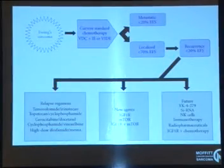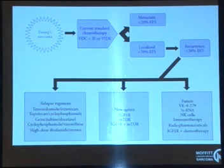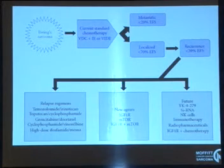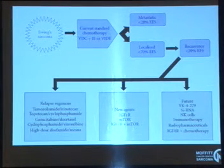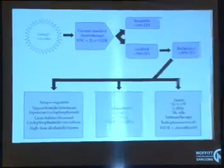New agents being tried for Ewing sarcoma, especially with recurrence, include temozolomide, topotecan, and gemcitabine, which seem fairly effective. Newer targeted agents include IGF-IR antibodies, which seem very important, and mTOR inhibitors. We're also moving into immunotherapy and specific drugs targeting the translocation for future treatment of Ewing's.